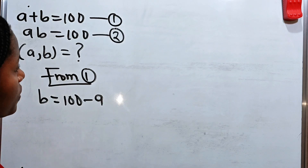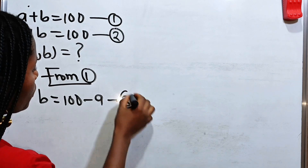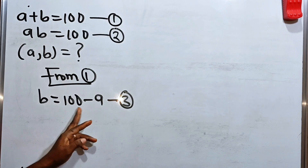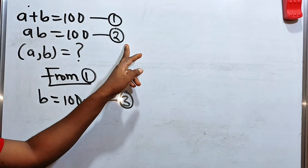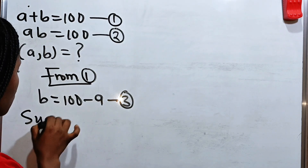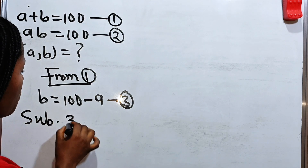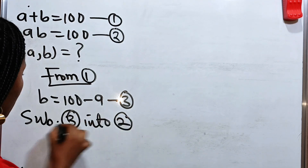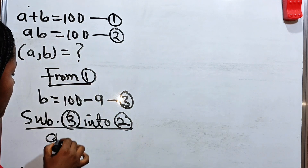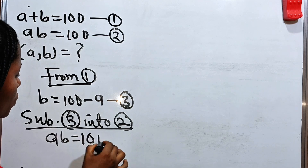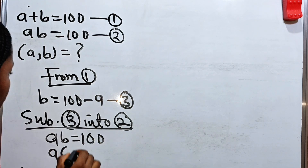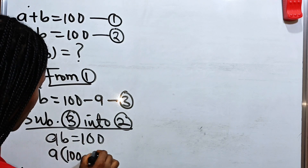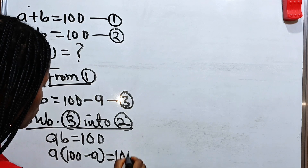B is equal to 100 minus A. Now let's call this equation 3. Then, if we substitute B equals 100 minus A into equation 2 — let's substitute equation 3 into equation 2. Now what does equation 2 say? Equation 2 says that AB is equal to 100. So that means A bracket — now AB is 100 minus A, right? — 100 minus A is equal to 100.